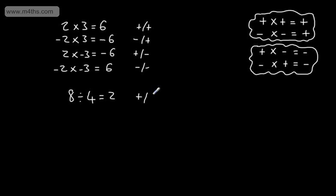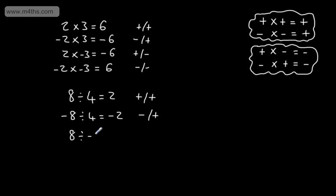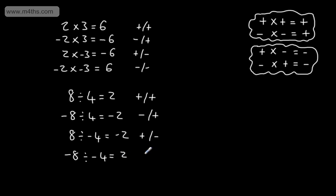We have a positive and a positive. If I did negative 8 divided by positive 4, the same numeric value yet the answer is going to be negative — I've got a negative and a positive. If I did 8 divided by negative 4, that's going to give us again a negative answer. Finally, two negatives: negative 8 divided by negative 4 gives me positive 2. So if the signs are the same, the answer is positive.